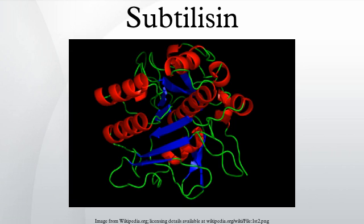Structure: The structure of subtilisin has been determined by X-ray crystallography. It is a 275-residue globular protein with several alpha helices and a large beta sheet. It is structurally unrelated to the chymotrypsin clan of serine proteases, but uses the same type of catalytic triad in the active site. This makes it a classic example of convergent evolution.